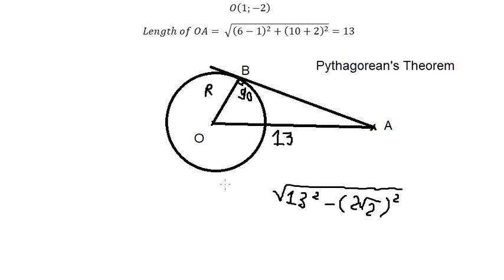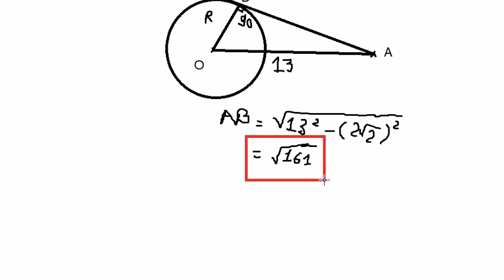So we can find AB, and the final answer is the square root of 161. That is the end — thank you for watching.